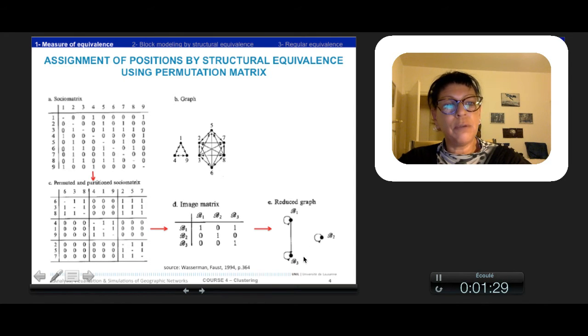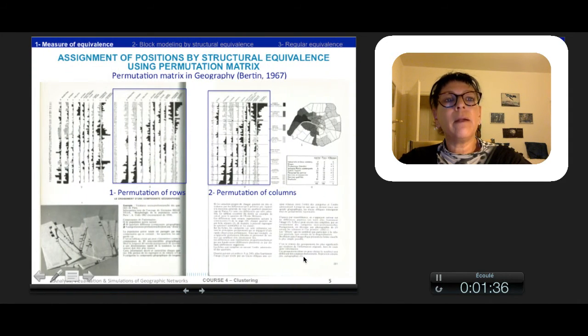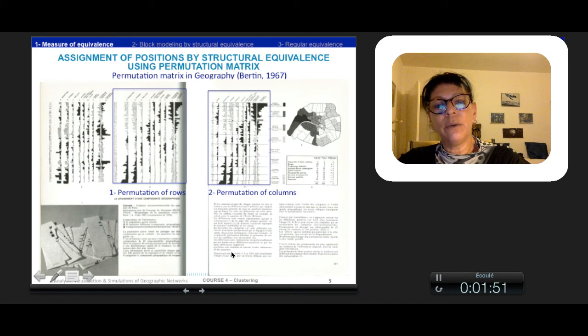This approach was introduced in the 80s in sociology. Note that geographers also used permutations of rows and columns like Bertha in 1967 who used it in order to classify the 80 Parisian quarters and their socio-economic population compositions.